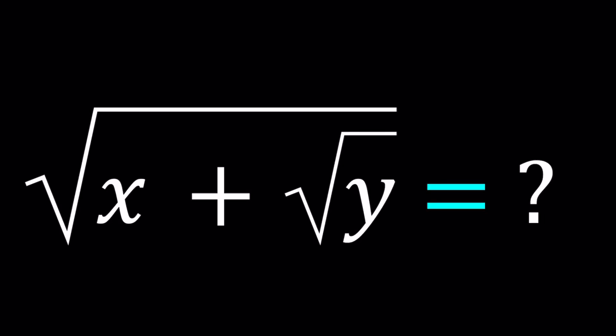Hello everyone. In this video we're going to be denesting a radical. This problem was inspired by comments by Nadia Fenn and other viewers. We're going to find a formula for the square root of x plus square root of y. First of all, what does denesting mean? Whenever you have an expression like this, we're going to try to write it as the sum or difference of two square roots, getting rid of that nested structure and writing it with one level.